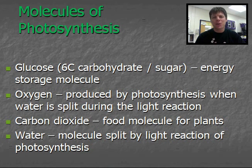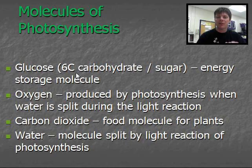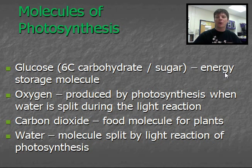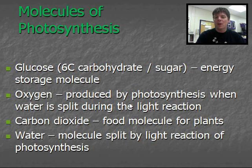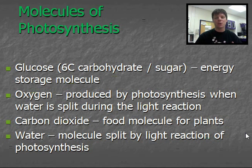Let's take a closer look at some of these molecules and their importance in the process of photosynthesis. First, glucose. This is a carbohydrate, it's a sugar, it's a molecule that has six carbon atoms. This is an energy storage molecule. Glucose in our bodies is an important molecule because this is a molecule which our cells can easily break down to release energy. Oxygen is produced by photosynthesis when water is split during the light reaction, and we know that this is important for life on our planet because so many life forms depend on oxygen.